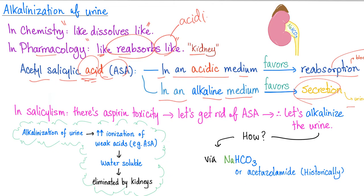Alkalinization of the urine increases ionization of weak acids — and aspirin is a weak acid. Increased ionization makes a substance more water-soluble, just like sodium chloride ionizes into sodium and chloride in water, making it water-soluble and salty. When aspirin is more water-soluble, the kidney can eliminate it. When everything fails, hemodialysis can remove aspirin from the system.